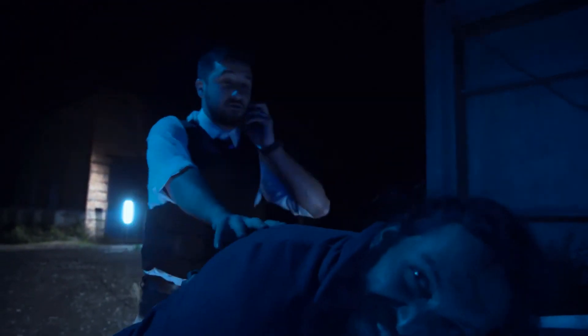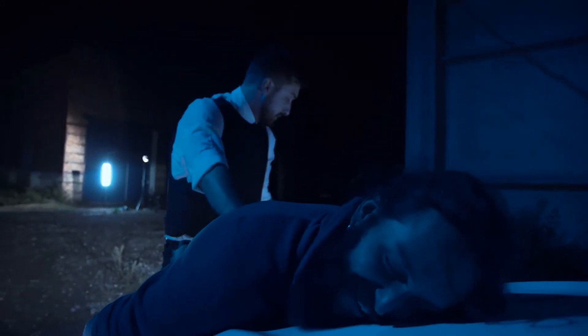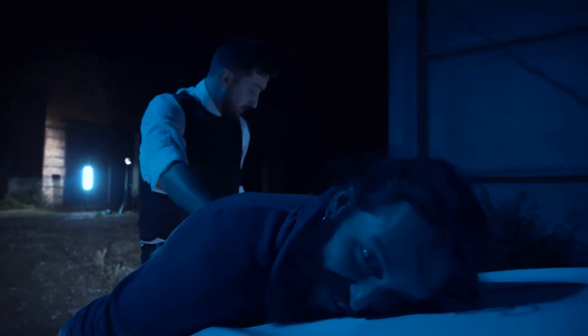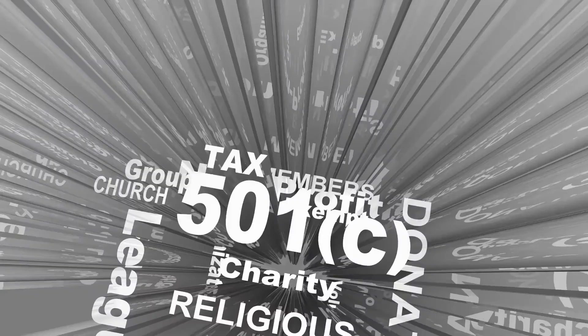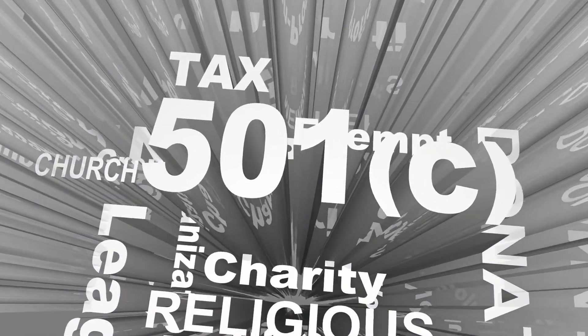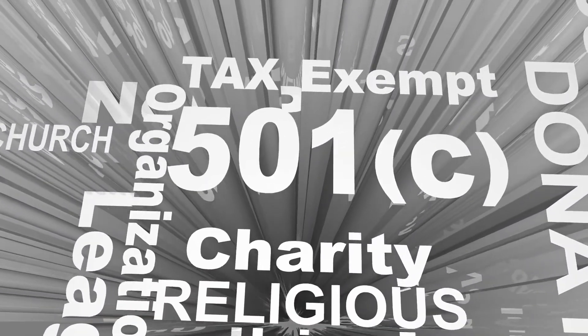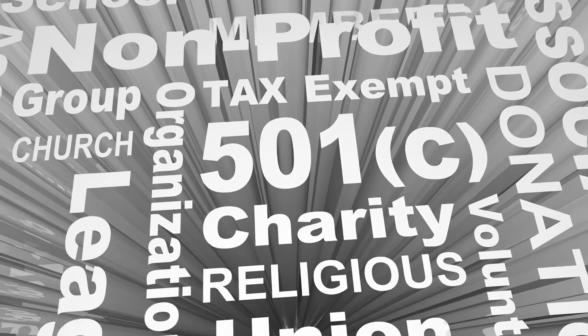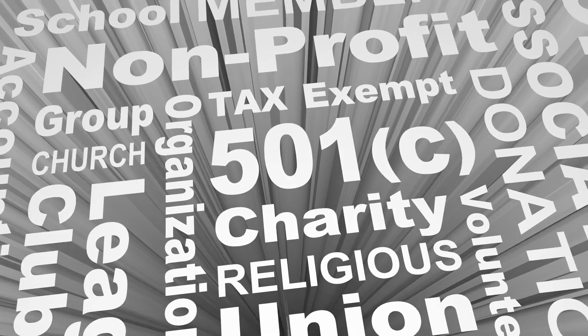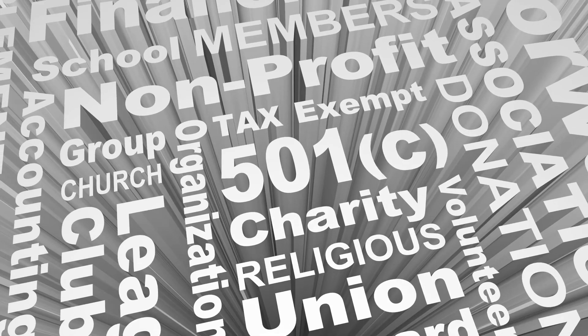Some trusts are revocable, meaning the grantor can change his mind about the provisions within it. Others are not revocable, meaning the trust arrangement is set in stone once it is signed and executed. Information about whether or not the trust can be amended or revoked is typically included in a declaration of trust as well.